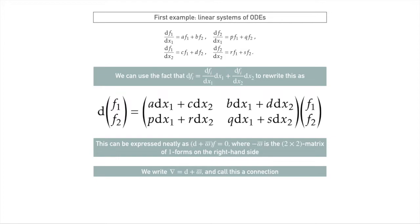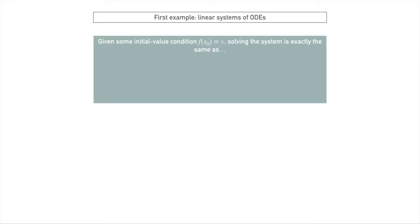Now let's talk a bit more about solving our linear system of ODEs. Normally you need some kind of boundary constraints to be able to solve a system of ODEs to kind of solve the constants. For example, if we're given an initial value condition, so we say that for some point x0 we know what f of x0 should be, then solving our system of ODEs is exactly the same as finding a section of the trivial rank r bundle with a fixed value at a given point, such that the section is nabla flat.